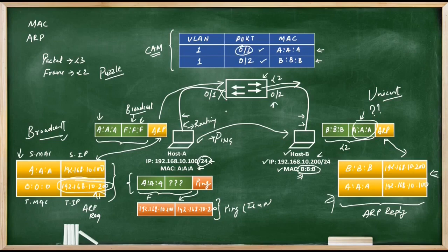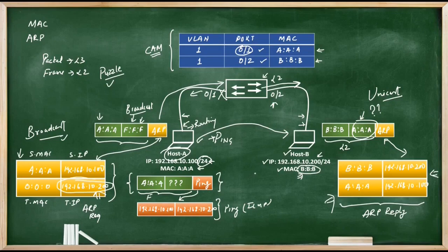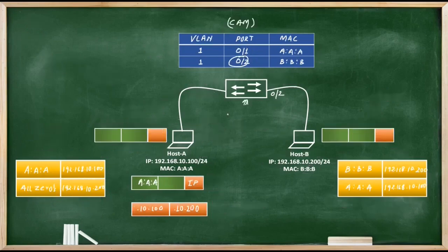The frame eventually reaches Host A. Host A processes the frame, removes the frame header, and gets the ARP reply message. The puzzle is solved — Host A now knows the destination MAC address. It can complete the original ping frame with destination MAC B:B:B. Once the frame is complete, it is put onto the wire.